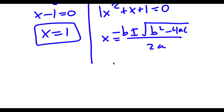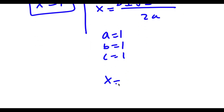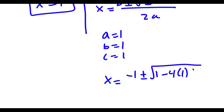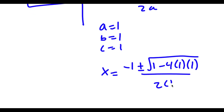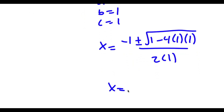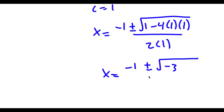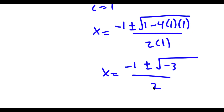So in this case, a is 1, b is 1, c is 1. So I get x is equal to negative 1 plus or minus the square root of 1 minus 4 times 1 times 1, all over 2 times 1. This is equal to negative 1 plus or minus the square root of negative 3, over 2.